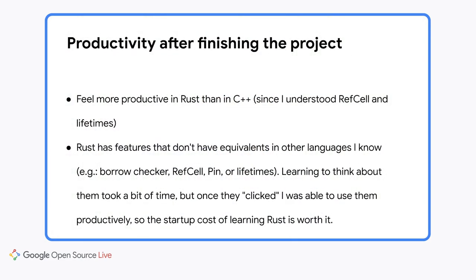Let's talk about productivity and code quality in Rust. I do feel more productive in Rust than in C++. This feeling started after I understood more about RefCells and lifetimes, which happened after I struggled with them. Rust also has features that don't have equivalents in other languages I know — for example, the borrow checker, RefCells, Pin, or lifetimes. Learning to think about them took a bit of time, but once they clicked, I was able to use them predictably.